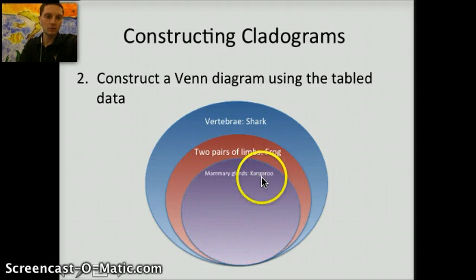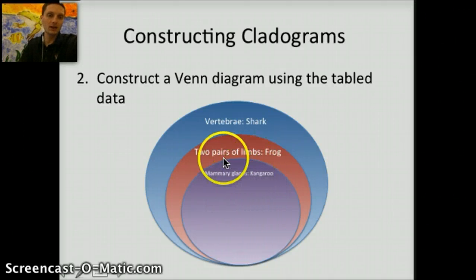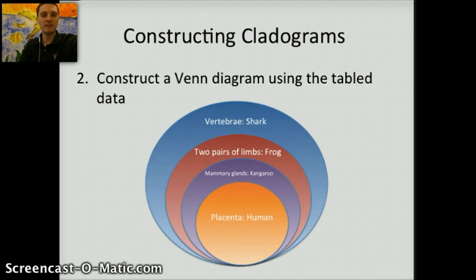Our next one is kangaroo, and it has mammary glands, so it also has two pairs of limbs and vertebrae. Lastly, we have placenta, and humans have a placenta, but they also, because of this Venn diagram, have mammary glands, two pairs of limbs, and vertebrae.